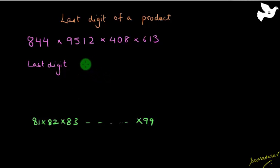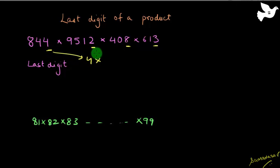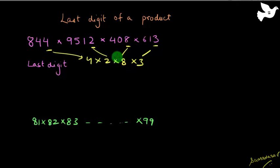For a product, it's very simple. If you have multiplication of any numbers like this, to find the last digit all you need to do is take the last digit of each of these numbers and multiply them, and see what is the last digit of that product. So for this example, what we need to see is: what is the last digit of 4 x 2 x 8 x 3? 4 x 2 is 8, 8 x 8 is 64. Just take the last digit, 4 x 3 is 12 — the last digit is 2.